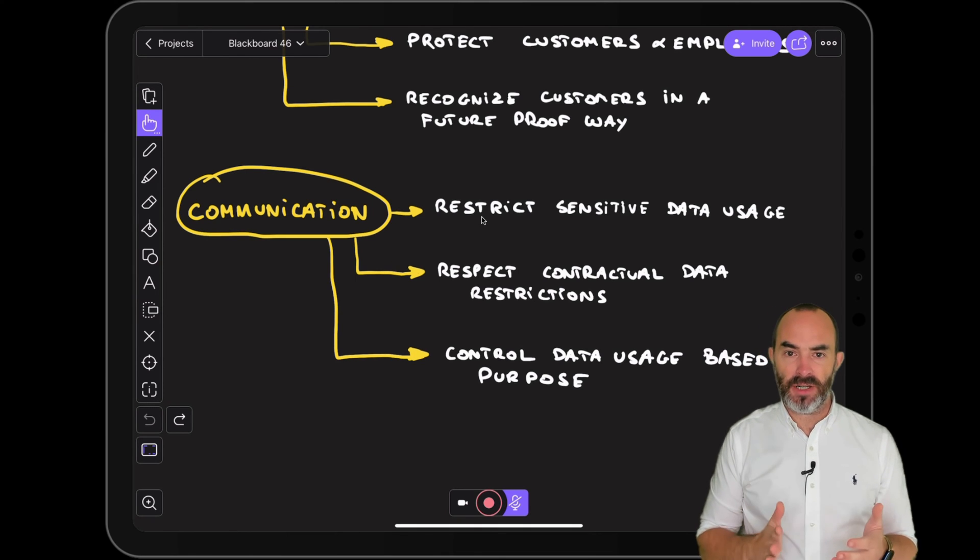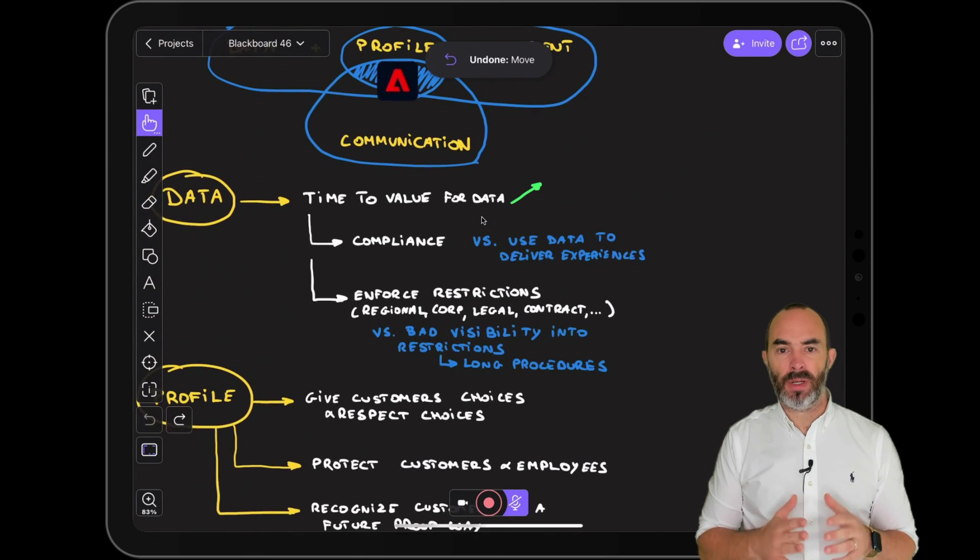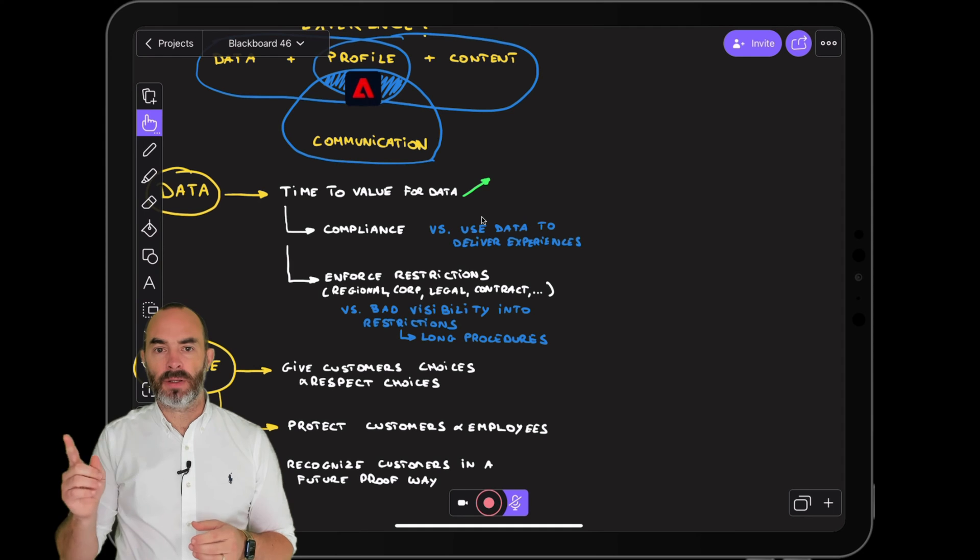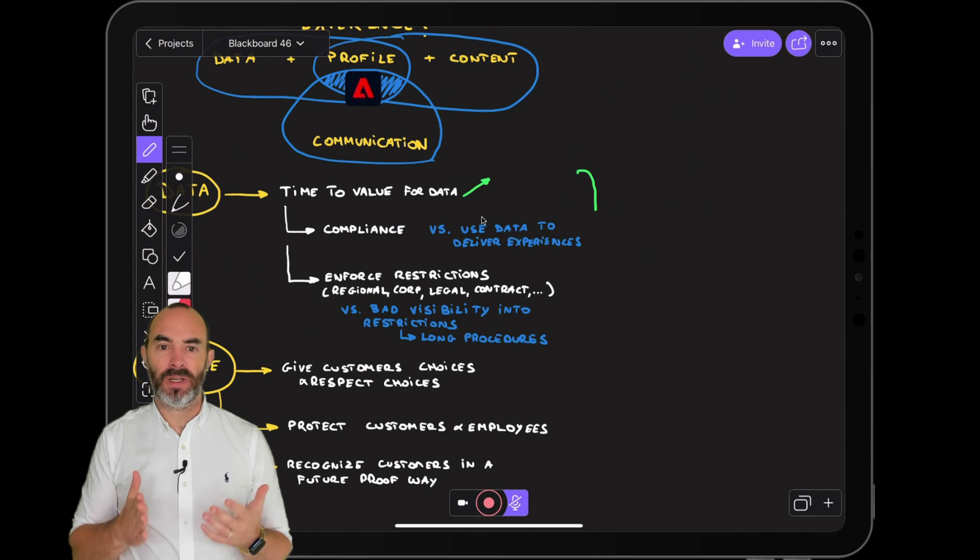The question at the beginning of this video was how to think about data management and data governance when choosing a CDP. Allow me to specify the requirements to implement a future proof data governance strategy. One, you need to have access to a common platform where the guardians of the data and the marketers can work together.